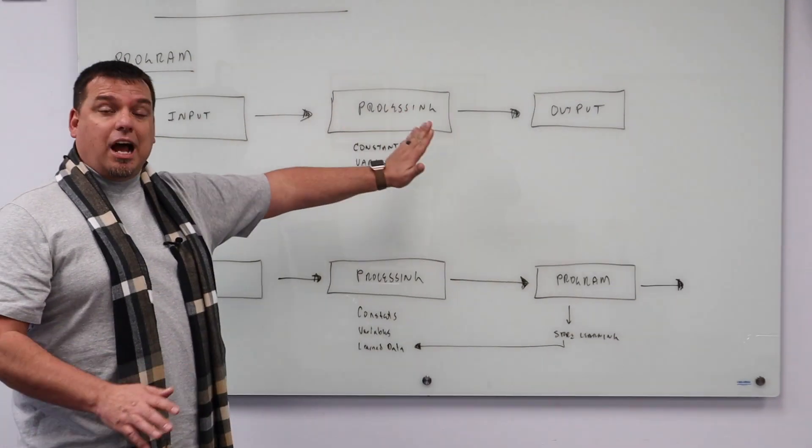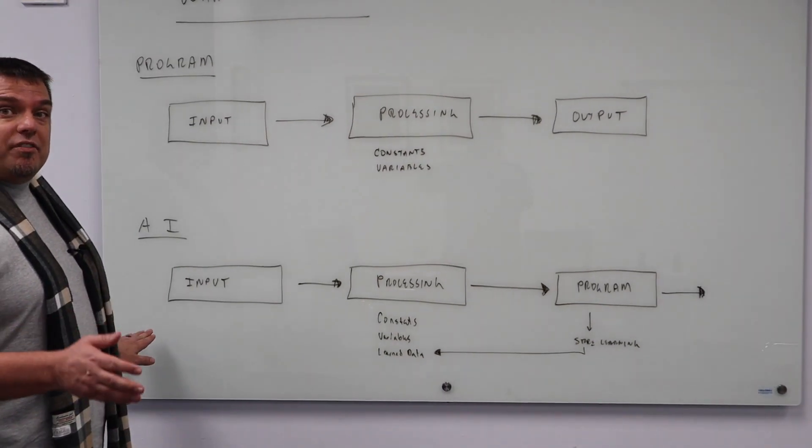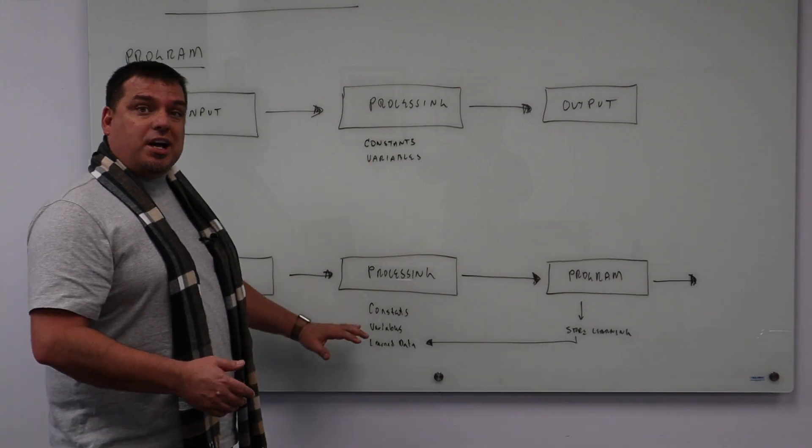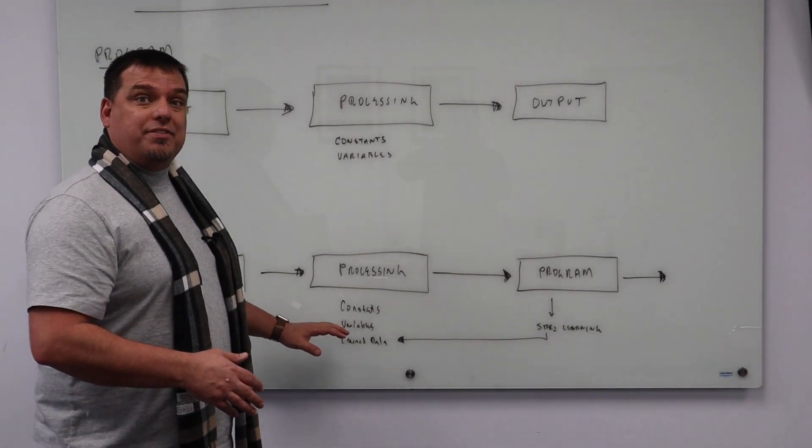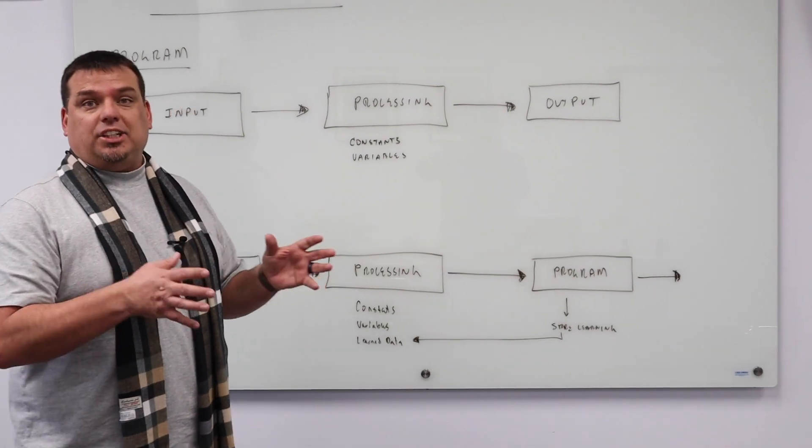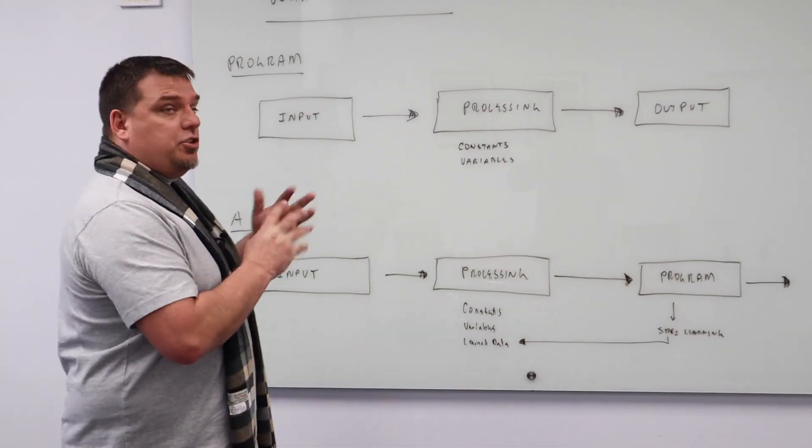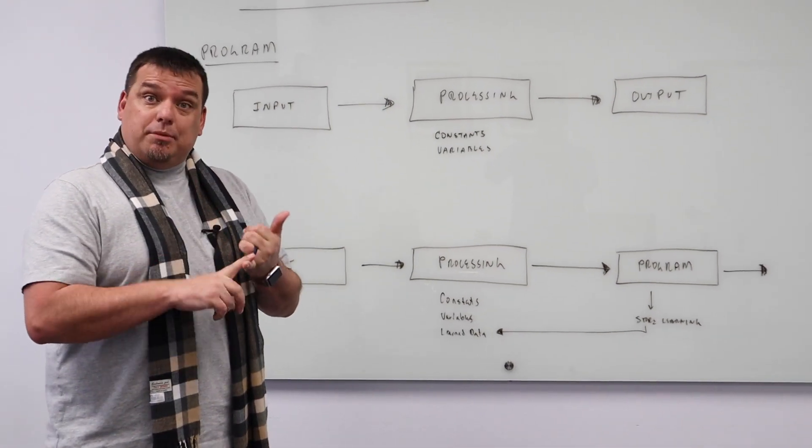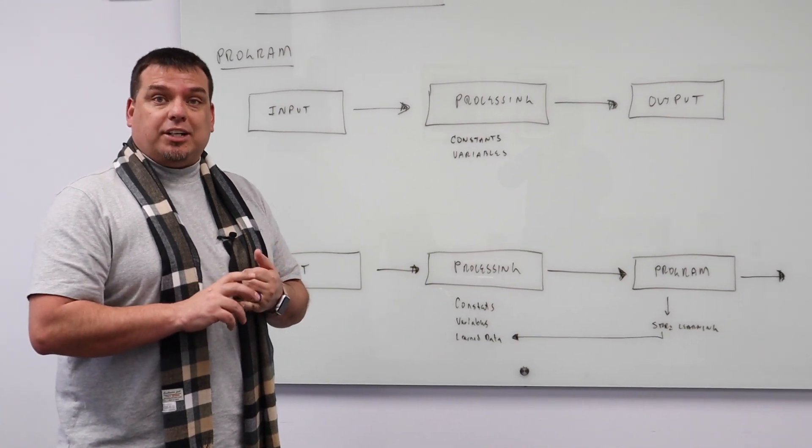That is, it has inputs processing and output. A machine learning algorithm or artificial intelligence has inputs processing which includes data it learned previously and outputting to another program or data store. That in a nutshell is what AI is. In future videos, we're going to explain how to write a machine learning algorithm and how to use it in actual application.